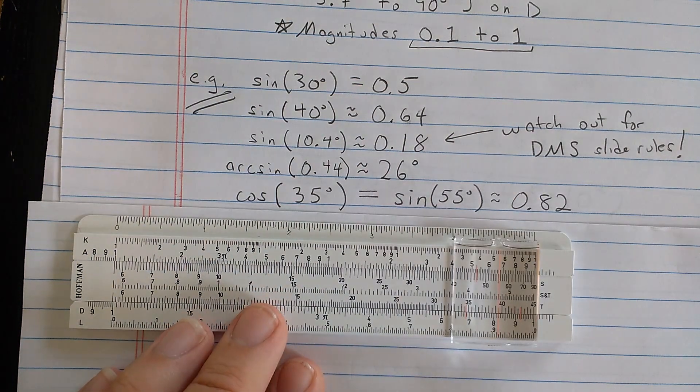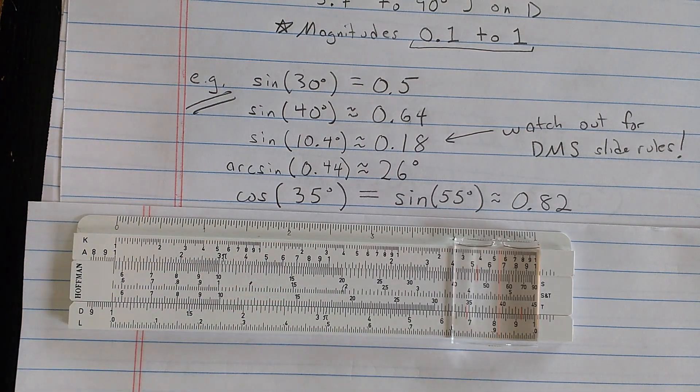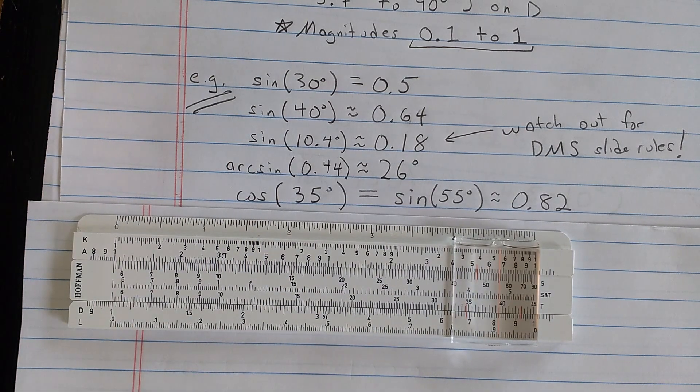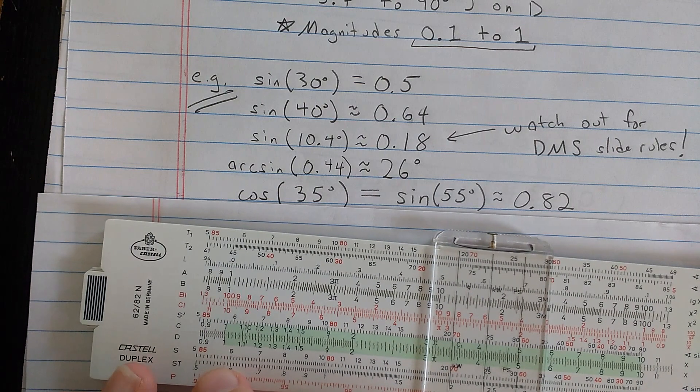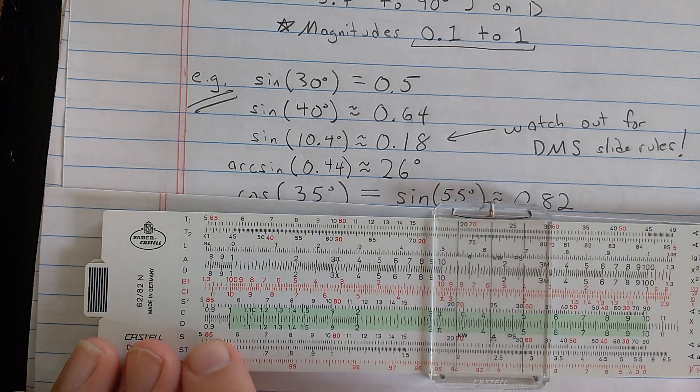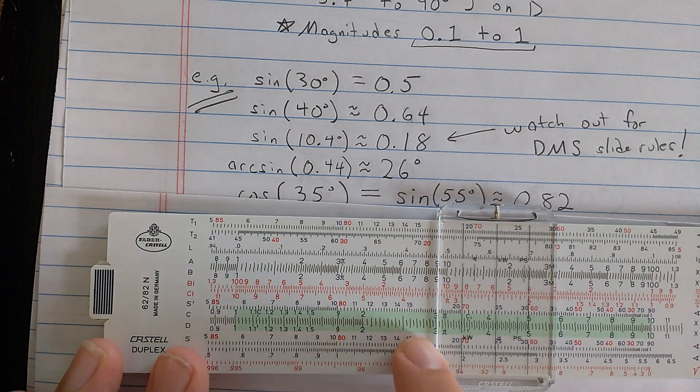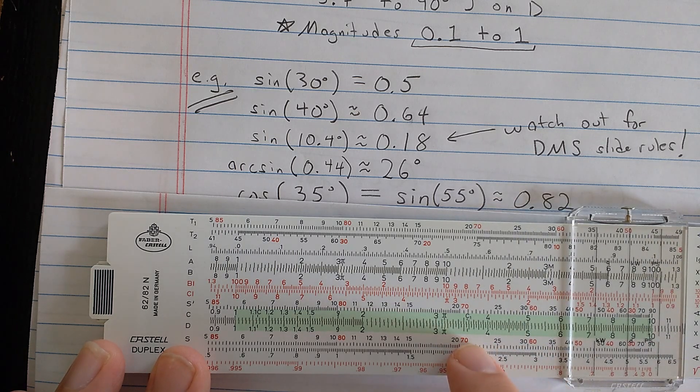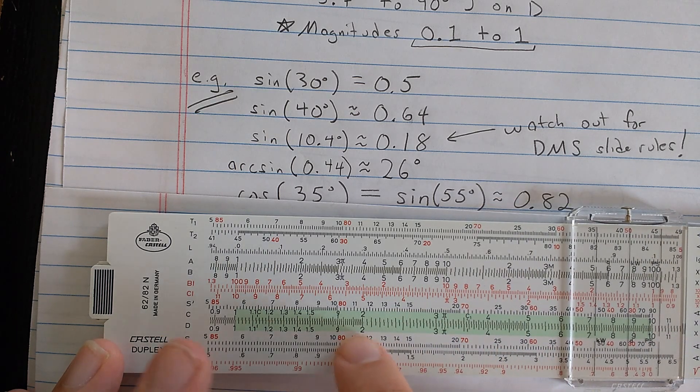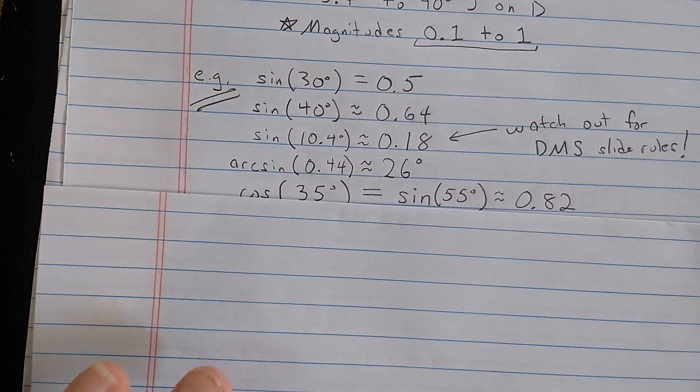So I can compute sine, cosine, arcsine. You can compute arc cosine, if you're clever. Now, you can see here's a fancier slide rule. Here is the S scale on the fancy slide rule. In red, it's marked with the cosines, which you can see are the complements. So 20 and 70, 10 and 80. So that's for computing cosines.